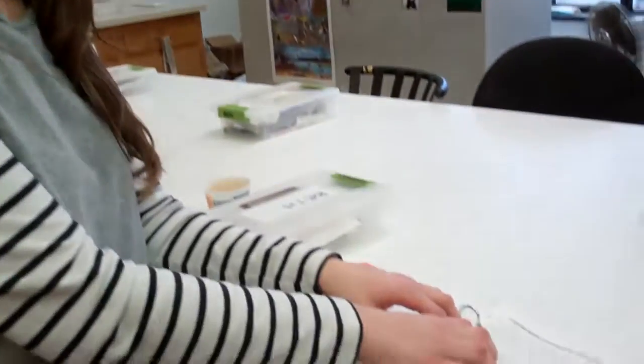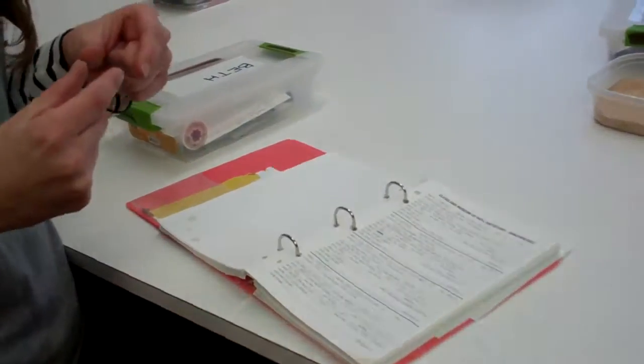This information gets transcribed onto the small specimen tags. It gets attached to the bird and stays with that bird forever. So this is the hub, the first point of all of the data that we collect for our birds.